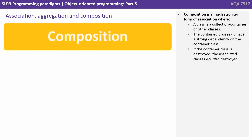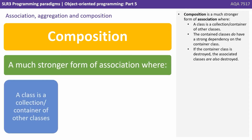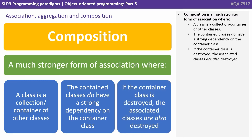Composition is a much stronger form of association, where a class is a collection or container of other classes. The contained classes do have a strong dependency on the container class, and if the container class is destroyed, the associated classes are also destroyed.